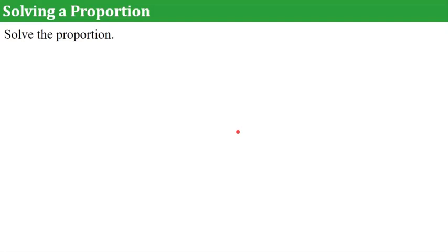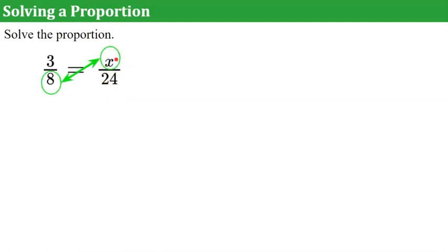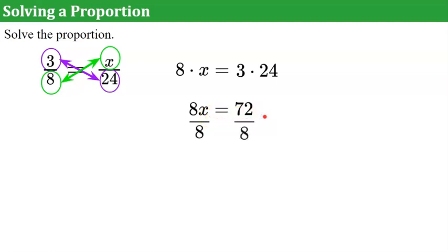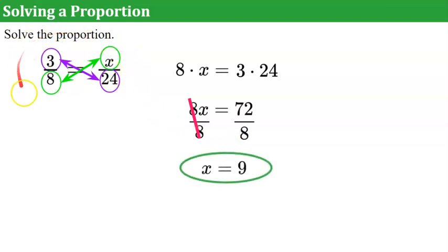Now let's look at solving the proportion. We have 3 over 8 is equivalent to x over 24. A proportion is an equation with an unknown x. To solve this, I'm going to use cross-product. 8 times x is 8x, and then the other cross: 3 times 24. These are equal to each other because we're given the proportion. So 8x equals 3 times 24, which is 72. To undo multiply by 8, I divide both sides of my equation by 8. 8 divided by 8 is 1, giving me x. And 72 divided by 8 is 9. So to make these equivalent ratios, x would need to be 9.